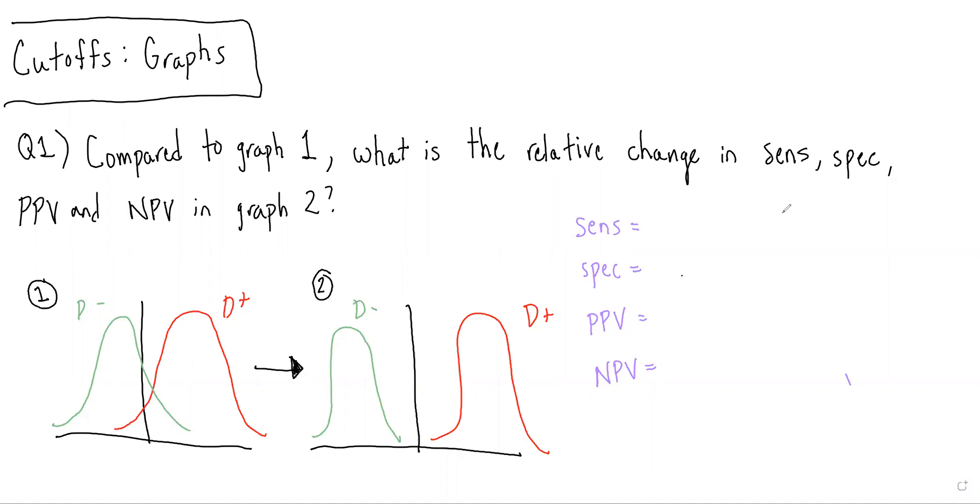We can see that whereas there's a lot more overlap in graph one, in graph two there's basically no overlap. None of the D- crosses to the right of the cut-off, and none of the D+ crosses to the left of the cut-off.